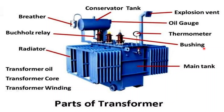Next, we have the bushing. Bushings are insulated structures that allow electrical conductors to pass through the transformer tank without making contact with it, preventing electrical short circuits. They are essential for safely connecting internal power lines to the transformer windings.